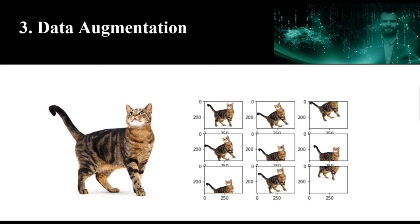To get more data we just need to make minor alterations of our existing data set. Even though the changes that we are making are quite subtle our network will think that these are distinct images. The benefit of data augmentation is that the model is unable to overfit all the samples and it is forced to generalize.